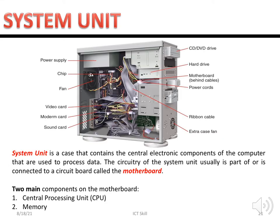A system unit is a box — a casing that contains electronic components. Inside the casing you can see a power supply, chip, fan, video card, graphic card, audio card, and many other components. Inside the system unit we also have a CD drive, hard drive, motherboard, power cords, and ribbon cables. The system unit contains one main circuit board called the motherboard.